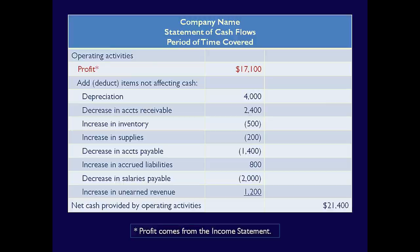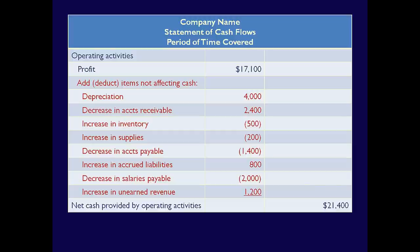Note that profit from the income statement is the beginning point under the indirect method. All the other amounts are reconciling items between profit from the income statement and cash flow from operating activities. This includes things such as depreciation and the change in current asset and liability accounts from the Statement of Financial Position. At the bottom of this section, we see that operating activities resulted in a net cash inflow of $21,400.